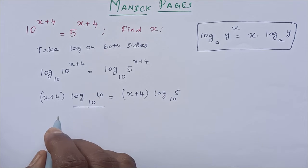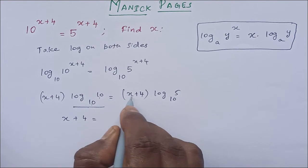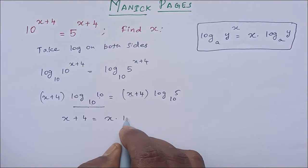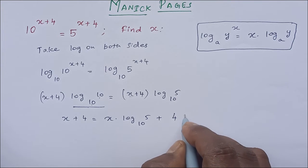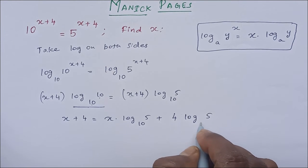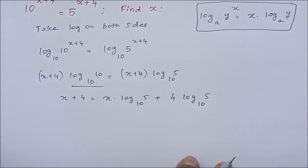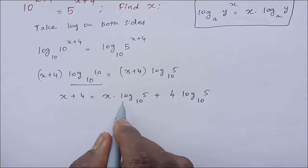plus 4 times log 5 to the base 10. Now we can take this x to this side and 4 to this side, so x minus x times log 5 to the base 10 is equal to